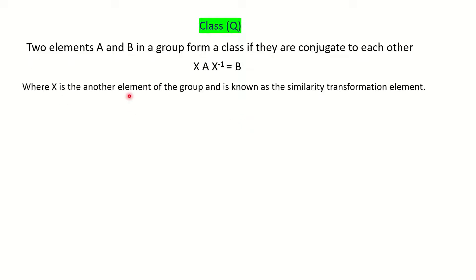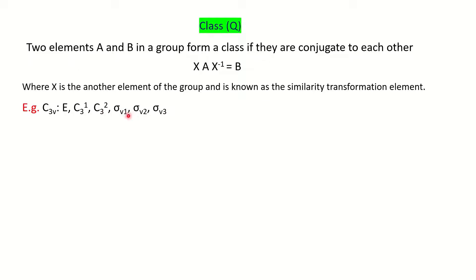We will see that by taking one example where X and X inverse are similarity transformations. We will take the C3V point group. I assume that you are aware of point groups and symmetry operations. Here you can see C3V point group has three different types of symmetry operations: identity, the C3 axis of rotation, and the three vertical planes. So the total symmetry elements are six, and therefore the order of the group is six.